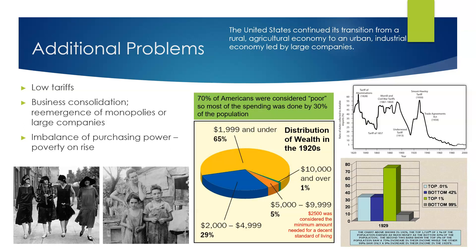The impact of the tariff was that Europeans' post-war recovery was significantly slowed. They desperately needed to trade with the U.S. so that they could earn money to pay the debts that they owed the U.S., including loans given during the war. In addition, the countries of Europe would also retaliate against the U.S. by enacting tariffs of their own, which slowed economic recovery even more. Then, when the stock market crashed in 1929, triggering a worldwide depression, Europe's fragile economic condition simply couldn't handle the strain, especially Germany.